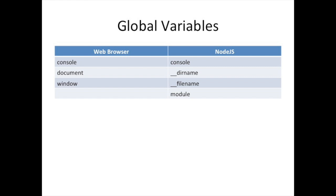In a web browser you have the `console` variable, the `document` variable representing the page, and `window` representing the browser window — letting you do things like navigate back, forward, or load a URL. In Node.js you also have `console`, but instead you have the current directory, the file name, and `module`. Knowing where your JavaScript is running matters because it dictates what global variables you have access to.